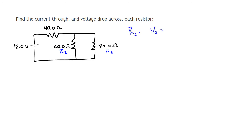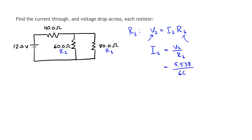We can use Ohm's Law for each individual resistor in the circuit, just as we used it for the whole circuit earlier to find the current out of the battery. For R2, we know the voltage drop across the resistor and we know the resistance, so we can rearrange for I2. That gives us 5.538 volts divided by 60 ohms, which gives a current of 0.0923 amps.